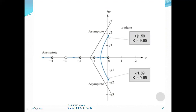All these quantities are recorded on the s-plane: sigma is the real axis and jω is the imaginary axis. Poles are at s = 0, −1, −2, −4 (marked with crosses) and the zero is at s = −3 (marked with a circle). The centroid is marked, asymptotes are shown at 60°, 180°, and 300°. The root locus shifts from the left half to the right half of the s-plane, intersecting the imaginary axis at ±j1.59, at a gain of k = 9.65.